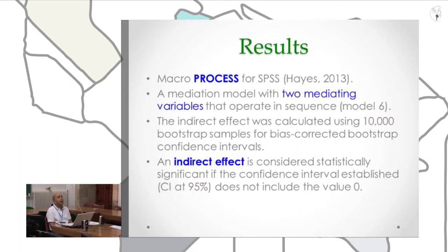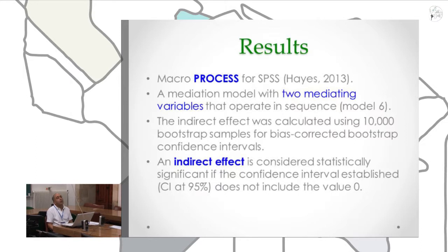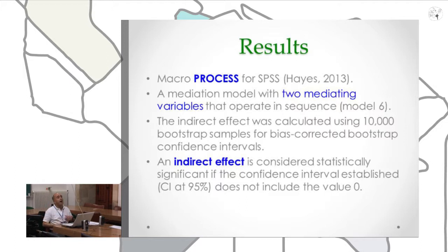This macro is very useful because it permits performing a mediation analysis with two mediating variables operating in sequence — in this case, cognitive elaboration and counter-arguing. With this PROCESS macro, we can obtain information about the indirect effect from identification through attitudes, explained by the two mediating variables: cognitive elaboration and counter-arguing.